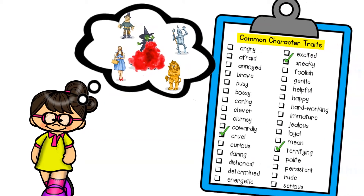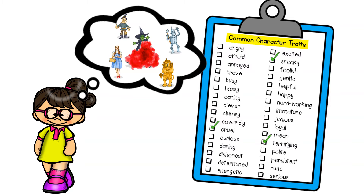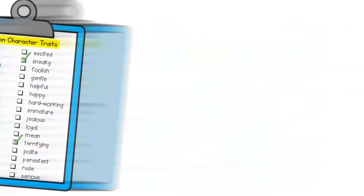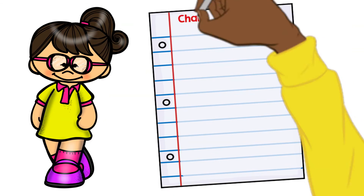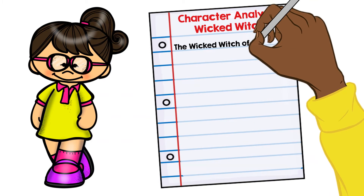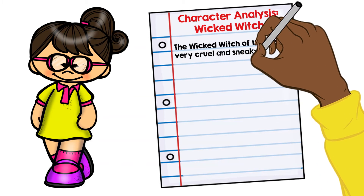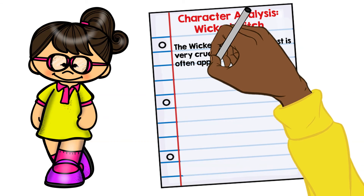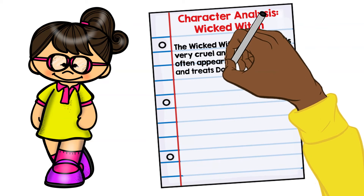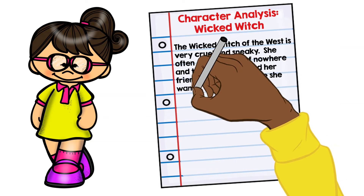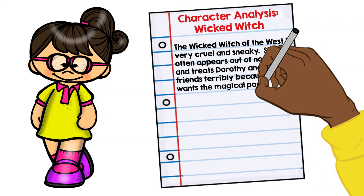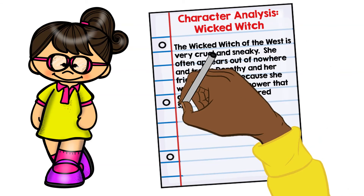When I write my character analysis, I'll be sure to use these words along with examples from the story to give a full analysis. It might sound something like this: The Wicked Witch of the West is very cruel and sneaky. She often appears out of nowhere and treats Dorothy and her friends terribly because she wants the magical powers that come from the ruby red slippers.